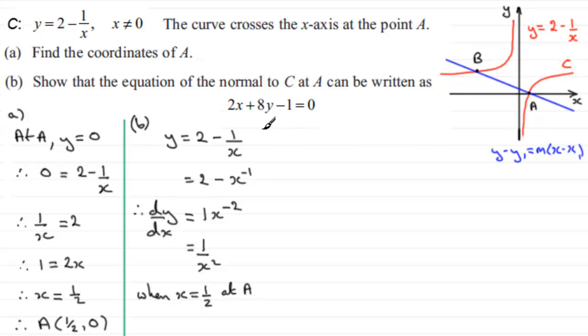Well, we can see that when x equals a half, dy by dx turns out to equal 1 over a half squared. 1 divided by a half all squared. A half all squared is a quarter. 1 divided by a quarter is 4. So, that's the gradient then of the tangent at A.